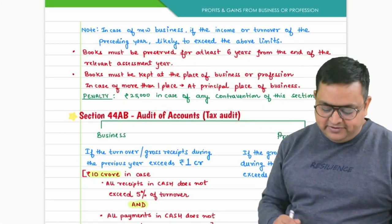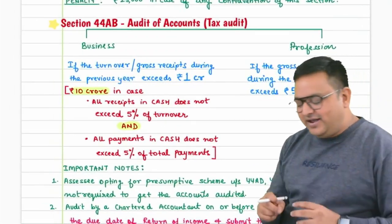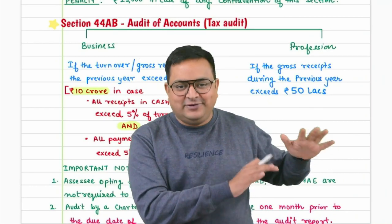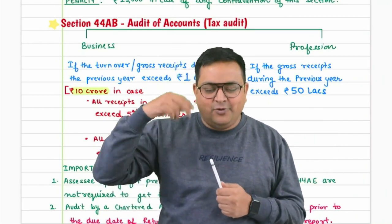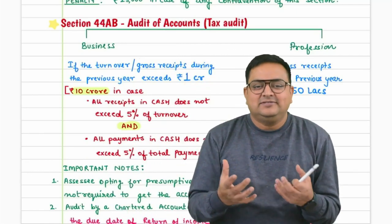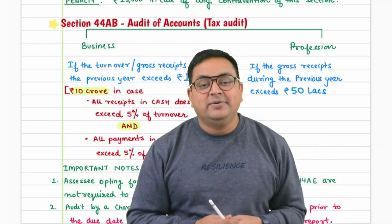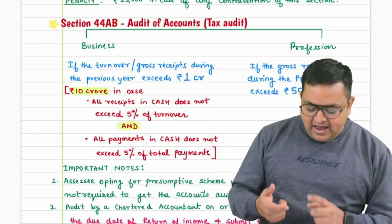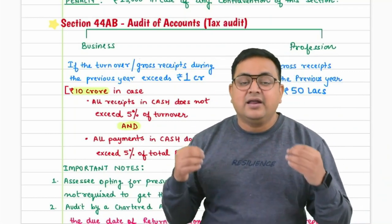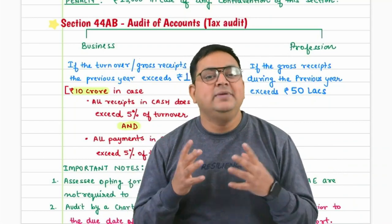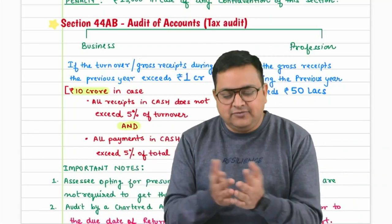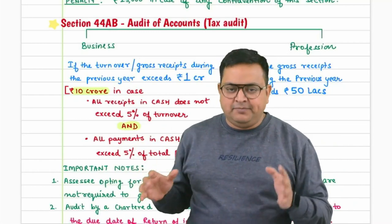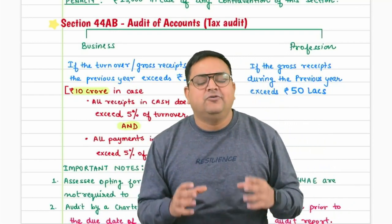Section 44AB covers tax audit, which is even more important than 44AA and directly relevant to Chartered Accountants since a CA conducts the tax audit. Now that we know who must maintain books of accounts, we must determine who is also required to get their books audited by a Chartered Accountant. For this, we form two groups: all professions in one group and all businesses in another.